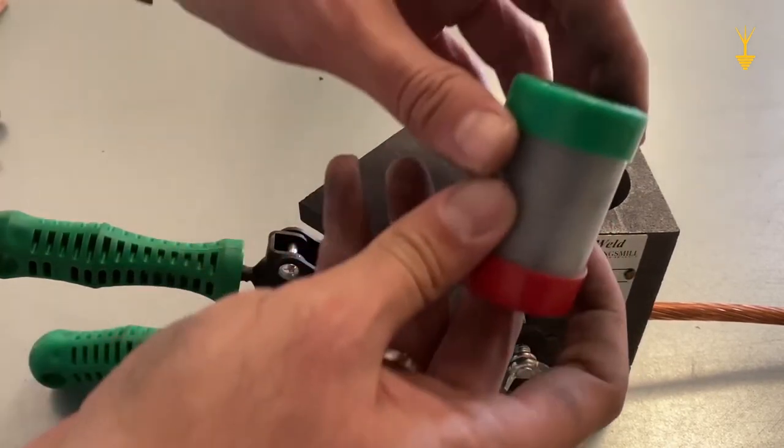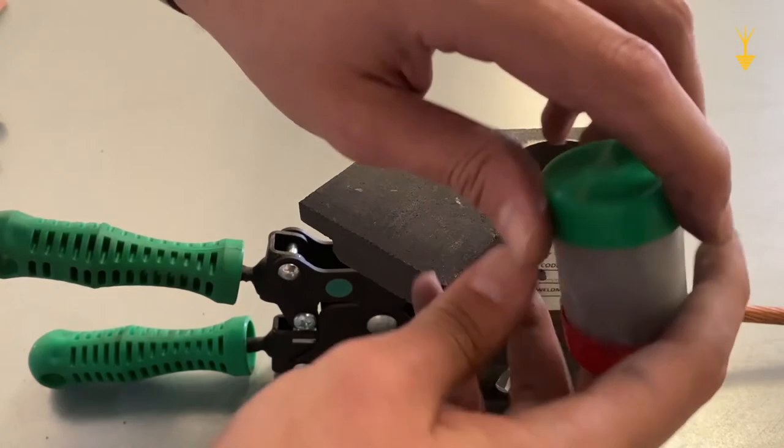Then, we open the green side of the Kingswell cartridge. And we're going to put the weld metal in.